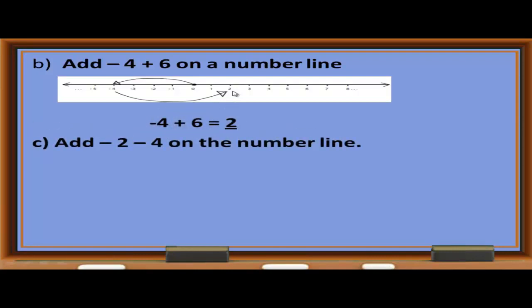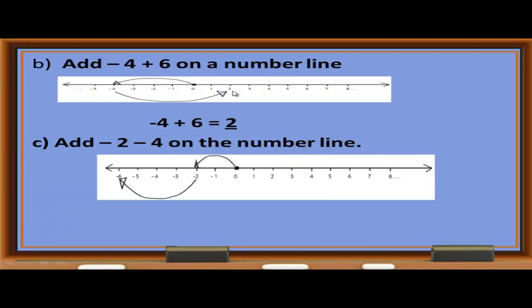Example C: Add (negative 2) + (negative 4) on a number line. We move 2 units from right to left to reach negative 2, then move 4 more units to the left. Therefore, negative 2 + (negative 4) = negative 6.